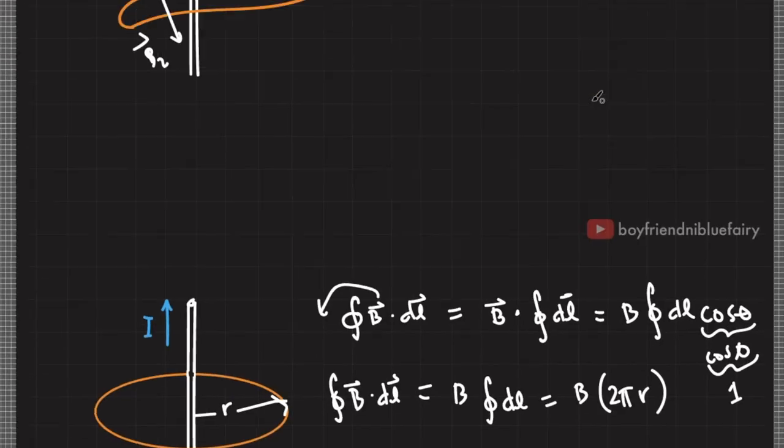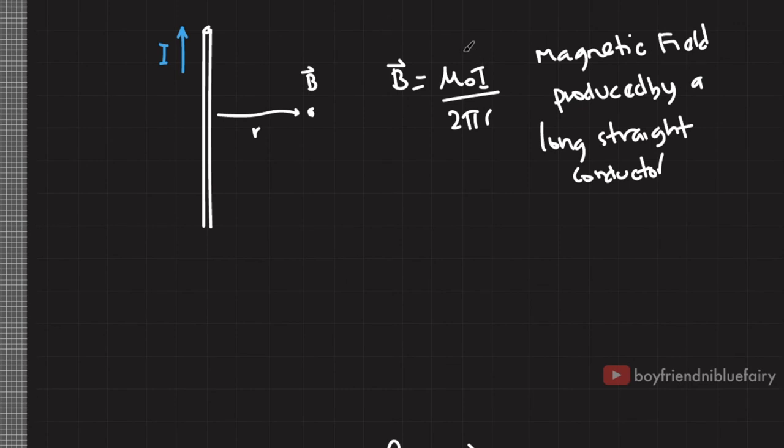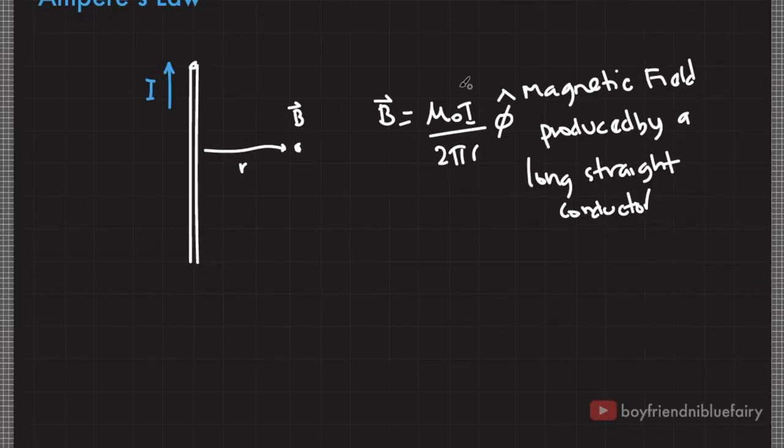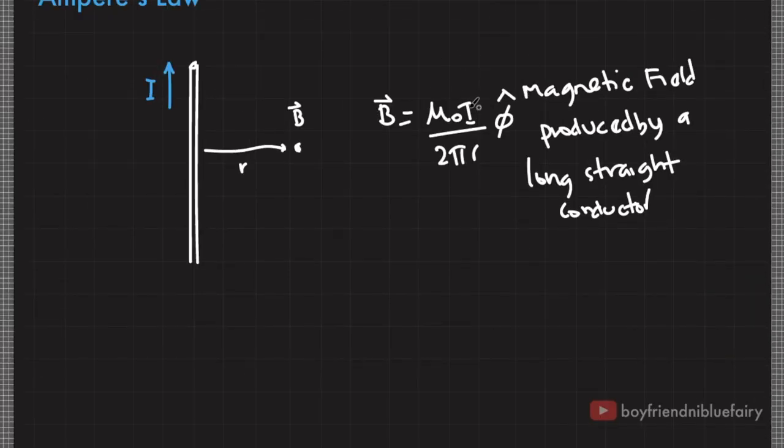But then again, we already derived the magnitude of this magnetic field. This actually has a direction that circles along this source. So basically, in cylindrical coordinates, this must be phi hat. Anyway, the only relevant terms here are the magnitude. So basically, this has a magnitude of B equals μ₀I over 2πr.